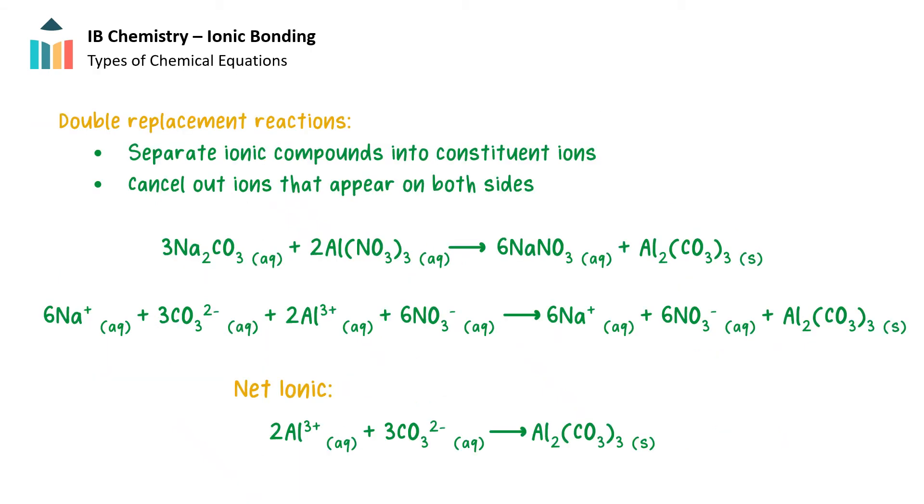Net ionic chemical equations are commonly written with double replacement reactions, and the ions that appear on both sides of the chemical equation are eliminated or cancelled out. When aqueous sodium carbonate and aluminum nitrate are mixed together, the precipitate aluminum carbonate forms, and the two transparent solutions become cloudy. Both reactant solutions are soluble and therefore consist of individual ions in solution.